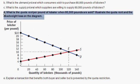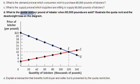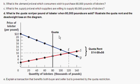Part D asks: what is the quota rent per pound of lobster when 80,000 pounds are sold? A quota rent is the extra earnings that accrue to sellers who have acquired the right to sell in this market. It's equal to the difference between the demand price and the supply price. Fixing the quantity at 80,000 lobsters, the demand price is $14 and the supply price is $8. So the quota rent is $14 minus $8, which equals $6.